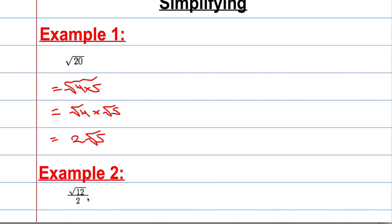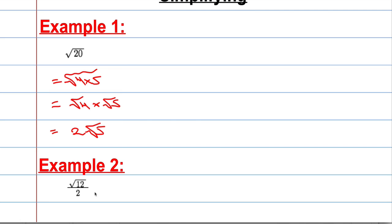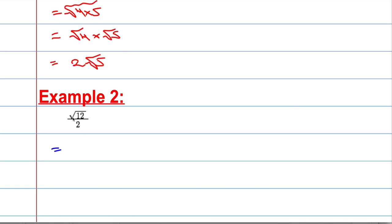Let's have a look at another example. We've got root 12 over 2. We're going to use another little feature here: if the surd of a product is equal to the product of the surds, it also follows that the surd of a quotient is equal to the quotient of the surds. So root 12 — can I think of two numbers that multiply together to make 12, where one of them is a square number? 4 times 3 will do nicely. So that's equal to root 4 times 3, all over 2.